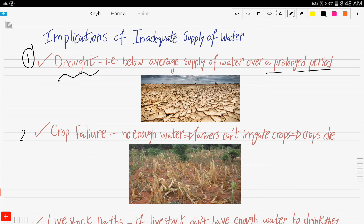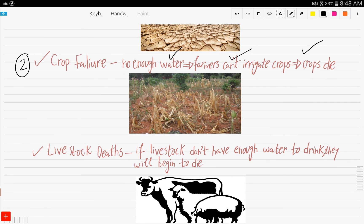The second implication of the inadequate supply of water is crop failure. Not enough water, therefore, farmers can't irrigate crops and hence the crops die.